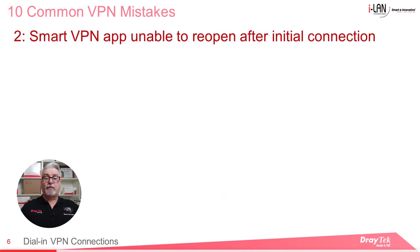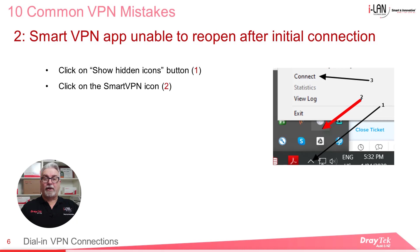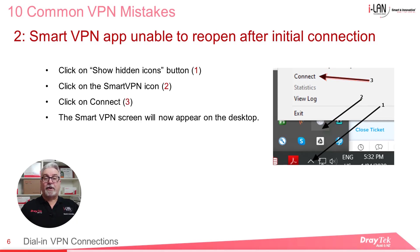The next item we'll look at is that in some cases the Smart VPN client is unable to reopen after the initial connection. This isn't really a mistake, but it can occur when using the Smart VPN client. To resolve it, go to the system tray, which is usually in the bottom right of the Windows desktop, click on the Show Hidden Icons button, then click on the Smart VPN icon. Then click on Connect. The Smart VPN screen should now appear on the desktop.